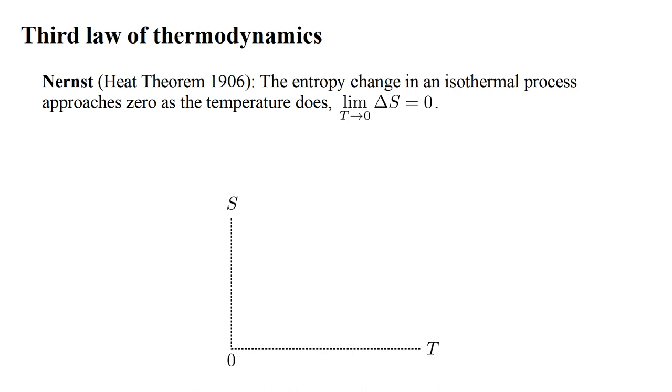Suppose we represent the thermodynamic state of a system on an S-T diagram, entropy versus temperature. Suppose U is some parameter, such as pressure or volume, or even magnetic field strength. Then U equals U-one forms a curve on the S-T diagram. And U equals U-two forms another curve. At a given temperature, an isothermal process, in which U changes from U-one to U-two, while T remains constant, is represented by a vertical line between these two curves. The vertical distance between the curves is delta S, the change in entropy due to the process.